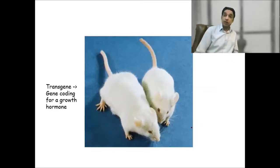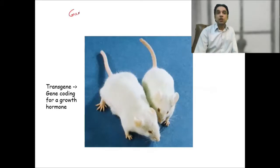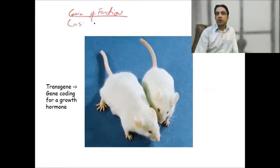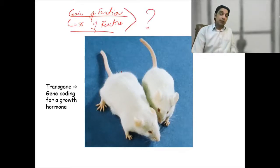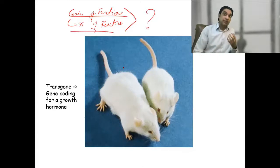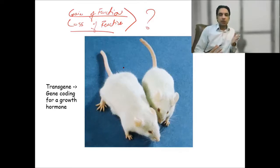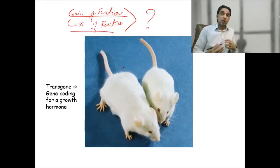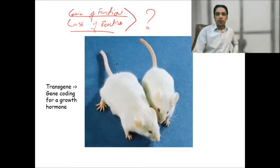There are two ways to study the function of a gene. One is gain of function studies — addition of certain genes. The other is loss of function study — removing a particular gene from the organism. Together these two approaches let us know about the function of a gene. We only came to know the full picture once we removed a particular gene from an organism.